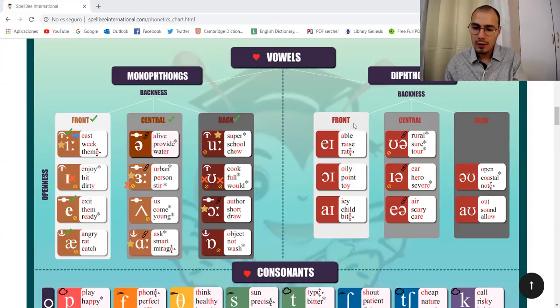The same is for the diphthongs. We have front, central, and back. And we have another symbol here.